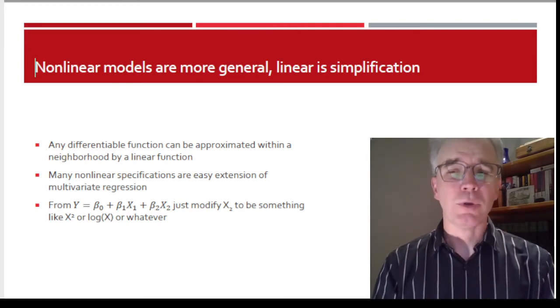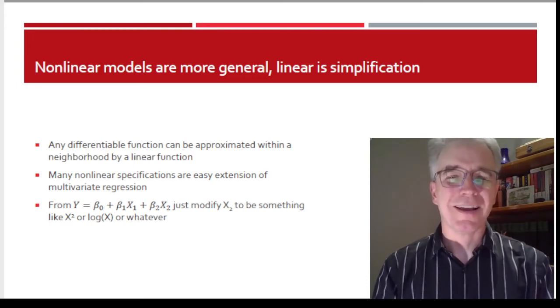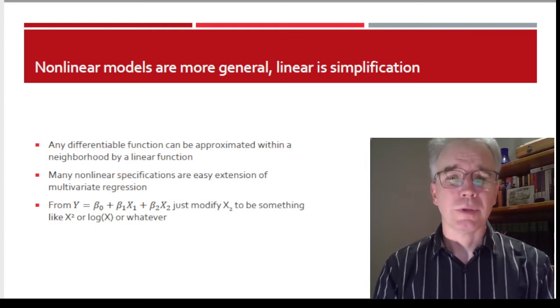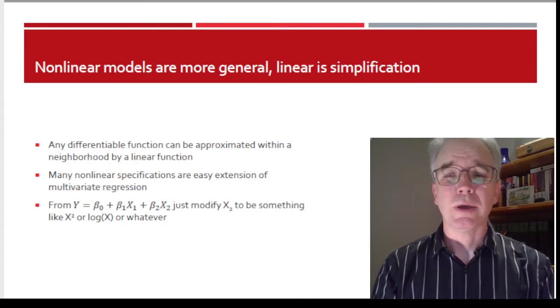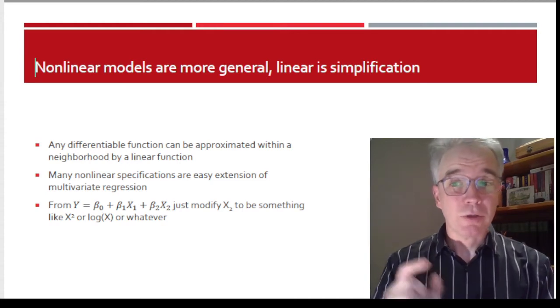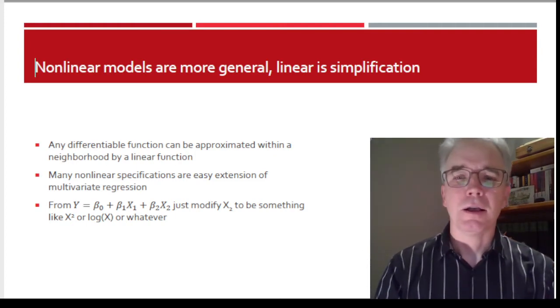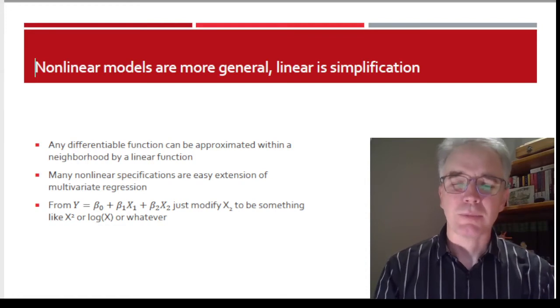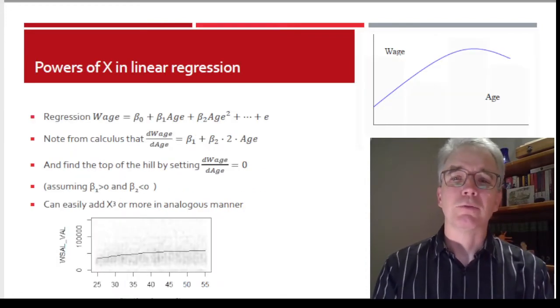And so how do we use a linear regression with a nonlinear term? Well, ordinarily we could do a multivariate regression. Y is β₀ + β₁X₁ + β₂X₂. But what if for X₂ I just move that 2 up? So it's called X₂ equal to X squared, or log X, or something like that. And the answer is, yeah, it works fine.